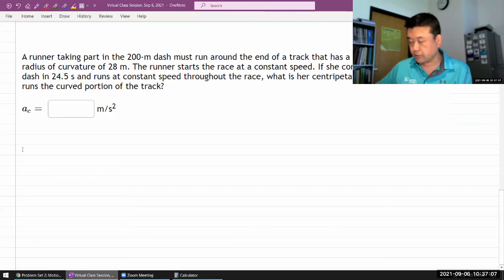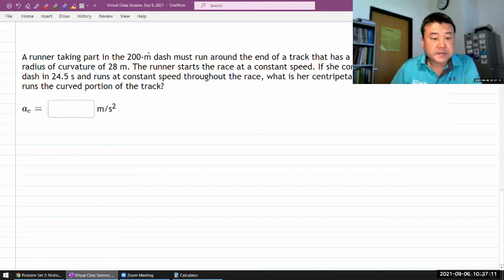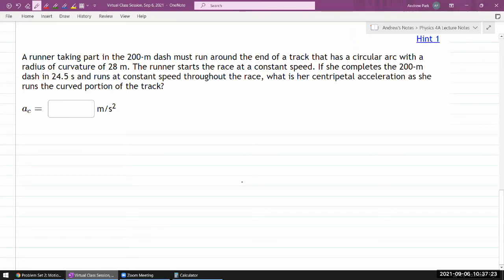Reading through the question here, it says a runner taking part in the 200-meter dash must run around the end of a track that is a circular arc with a radius. All right, let me start sketching. So I have some track, and I guess it's not a straight track, so the track is going to curve.